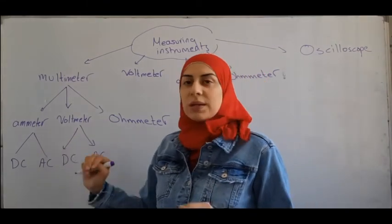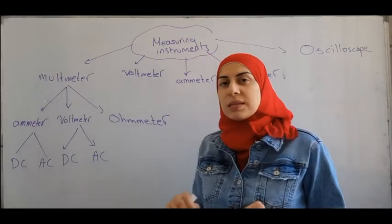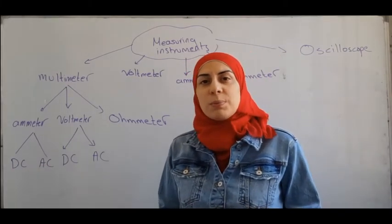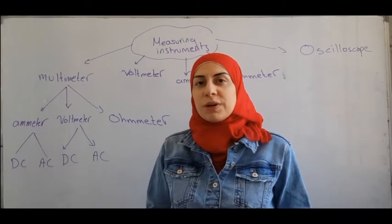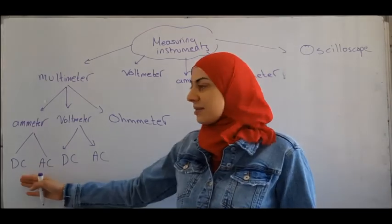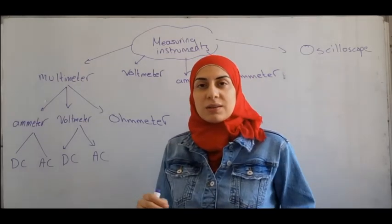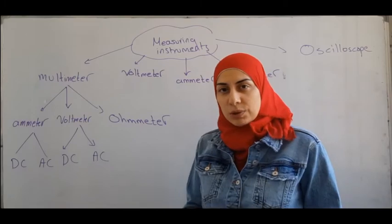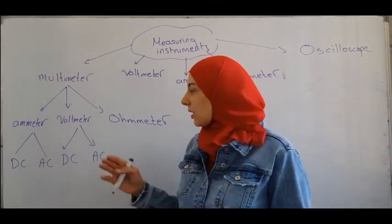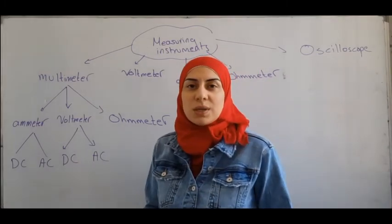The ammeter can function in two modes: DC mode or AC mode, depending on what it is measuring. If measuring DC current, it is in DC mode; if measuring AC current, it is in AC mode. The same applies to the voltmeter — it has DC and AC modes depending on what voltage it is measuring.